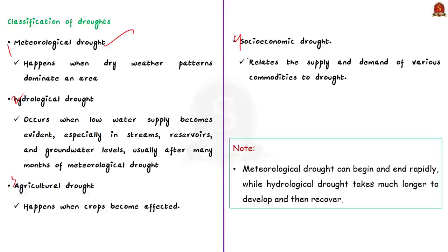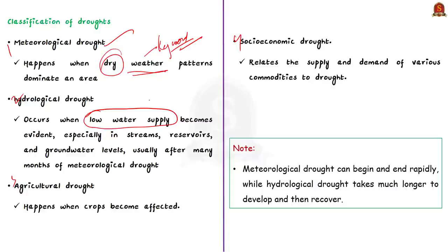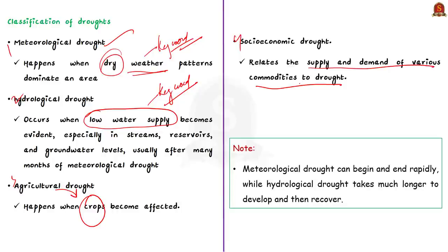Meteorological drought happens when a dry weather pattern dominates an area. Hydrological drought occurs when low water supply becomes evident, especially in streams, reservoirs, and groundwater levels. Agricultural drought occurs when crops become affected or fail. Socio-economic drought relates the supply and demand of various commodities to drought conditions. So basically, drought can be classified into these four types.